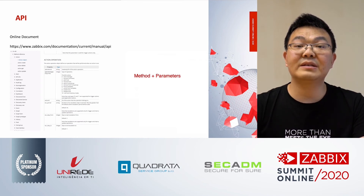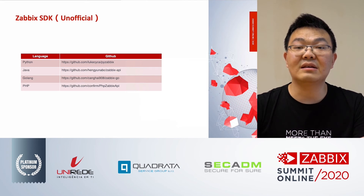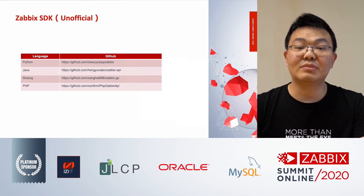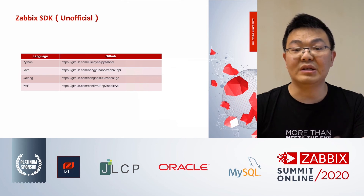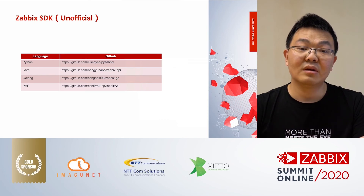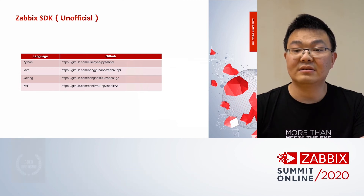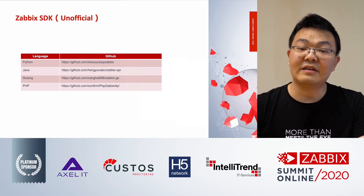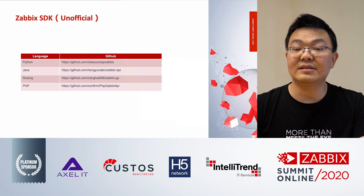Another topic is about SDKs. The Zabbix API is simple — it is just an HTTP request. But using an SDK is more efficient. Below are some SDKs that are commonly used. I forked a Zabbix SDK written in Golang and modified it. The original SDK did not support the latest Zabbix version, so I fixed it so that it could support all exact Zabbix versions.